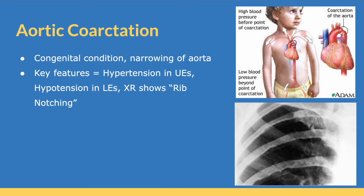Moving on to aortic coarctation, this is a congenital condition in which there is narrowing of the aorta. Some key features — buzzwords for this condition — include hypertension in the upper extremities with hypotension in the lower extremities, and an x-ray that shows rib notching.